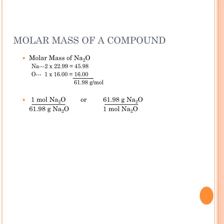For Na₂O: two sodiums (2 × 22.99 = 45.98) and one oxygen (1 × 16.00 = 16.00). Adding those extended values gives 61.98 grams per mole. Written as one mole of Na₂O over 61.98 grams of Na₂O, or 61.98 grams over one mole.